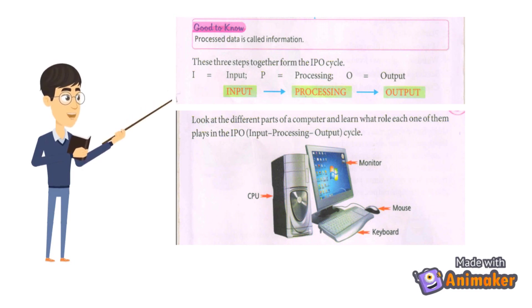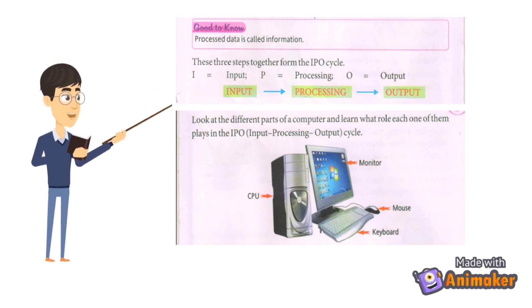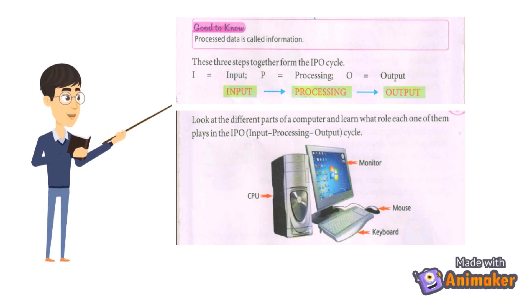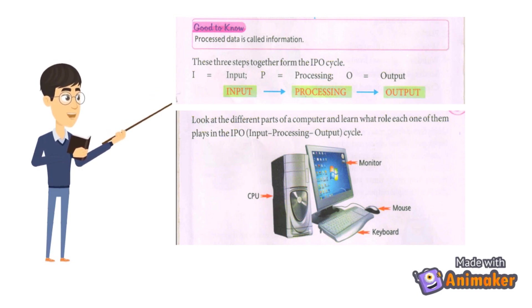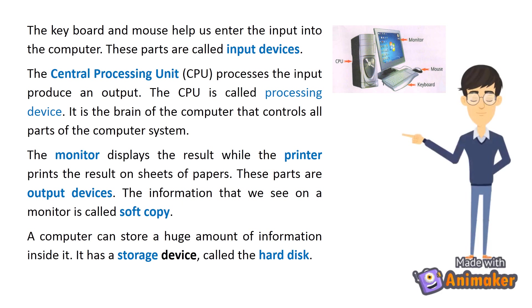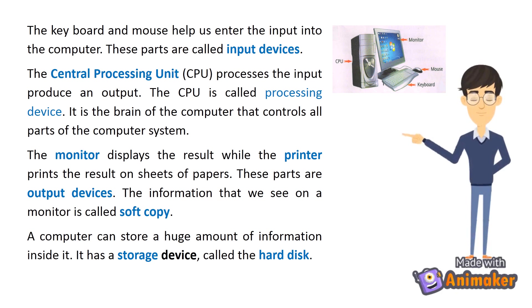I equals Input, P equals Processing, O equals Output — Input, Processing, Output. Look at the different parts of the computer and learn what role each one of them plays in the IPO cycle. The keyboard and mouse help us enter the input into the computer. These parts are called input devices.